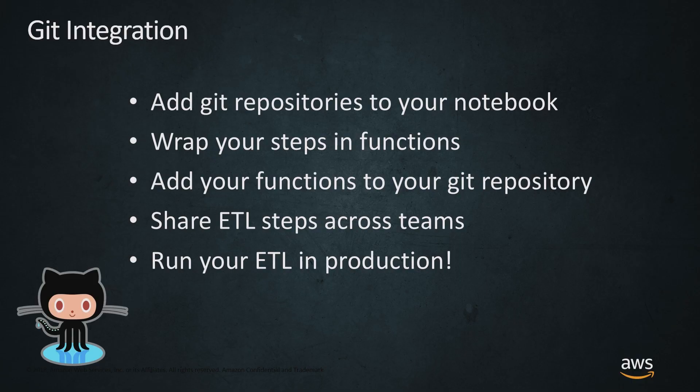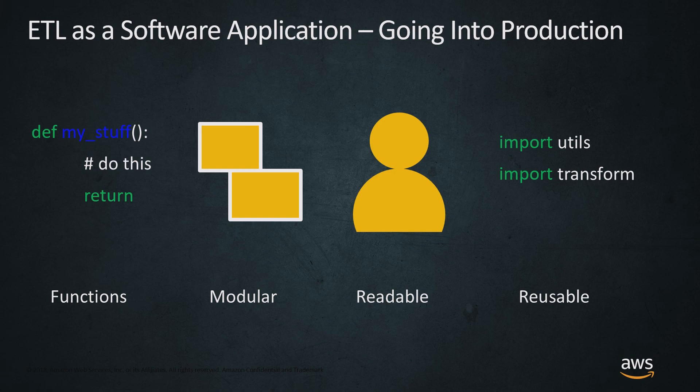Git integration - Git is crucial here, particularly in the ETL world. You're going to want to add a Git repository to your notebook. You're going to want to wrap your steps as functions. Add functions to your Git repository so that you can share your ETL steps across the members of your team. Also, you want to run your ETL in production. A lot of people in data science are realizing this is a key thing we need to really own.